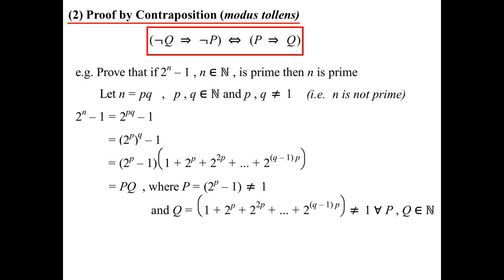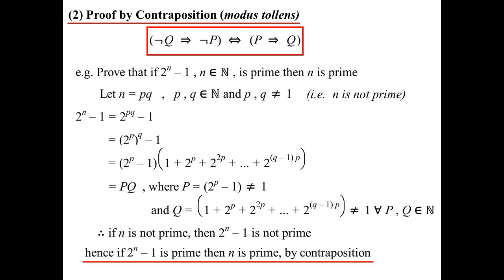That's true for all natural numbers P and Q. In other words, we've just shown that's not prime. So if N is not prime — that's what we assumed — then we've proven that 2^N − 1 is not prime. Using contraposition: hence, if 2^N − 1 is prime, then N is prime, by contraposition.